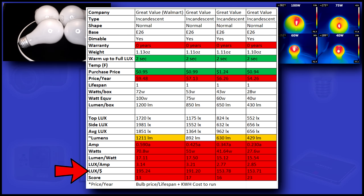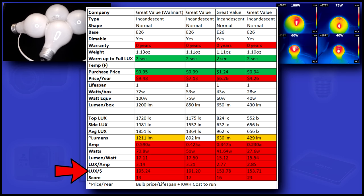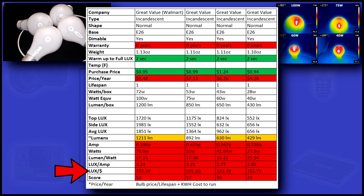The final measurement is lux per price per year, and as you can see, all four bulbs score very poorly.